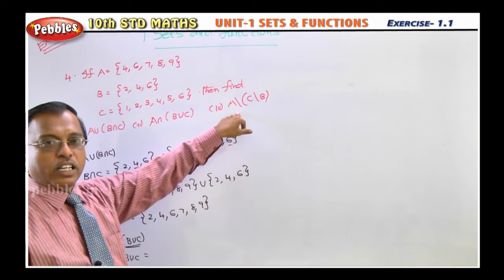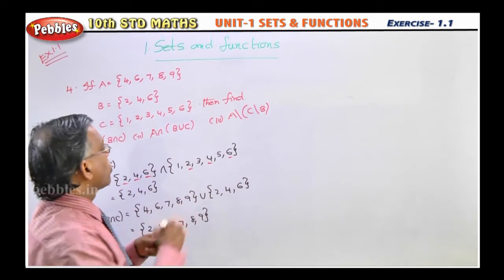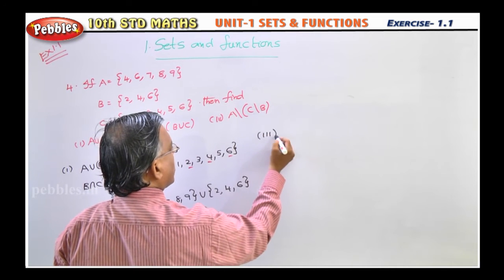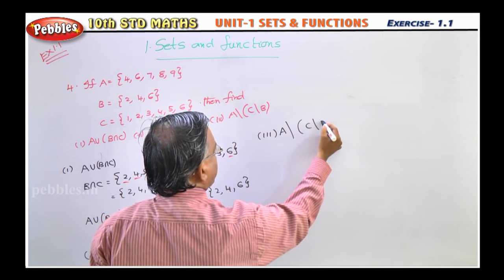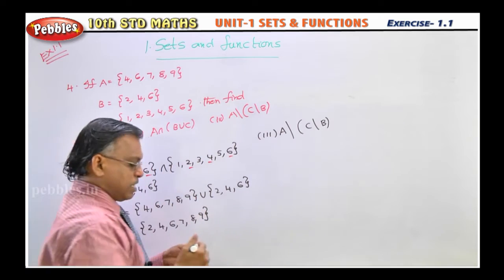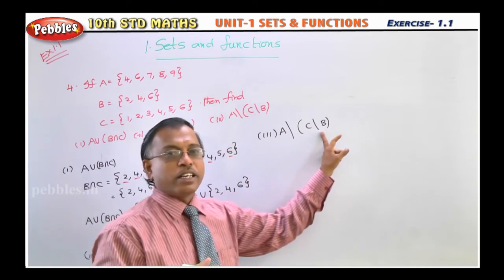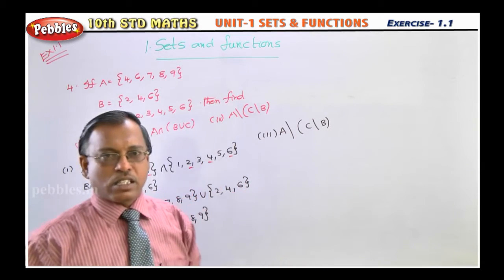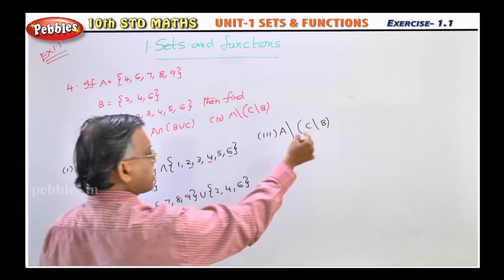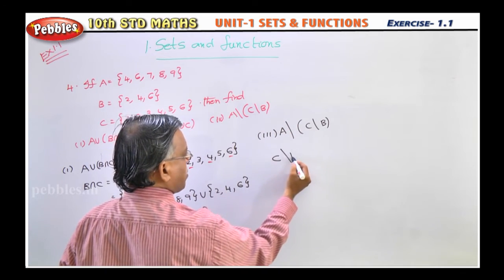Now third one is important because some confusion will come. Now third one, listen carefully. Third one: A slash C slash B. That means A difference C difference B. This slash presents the difference. Now, first, whatever present inside the bracket, you will find that one first.